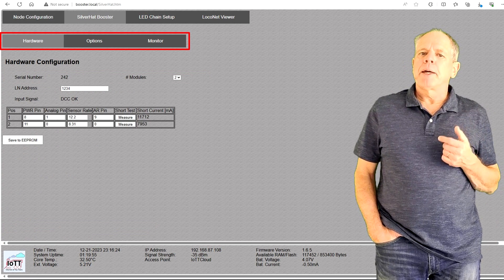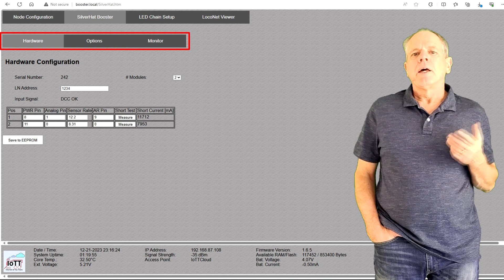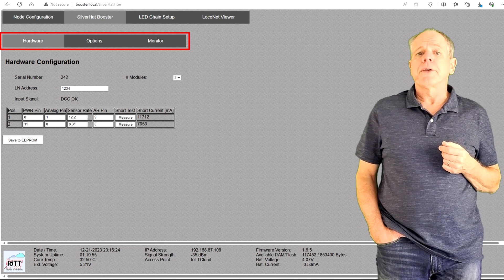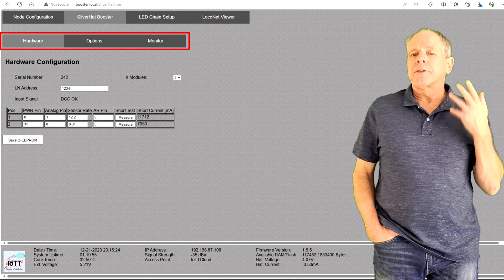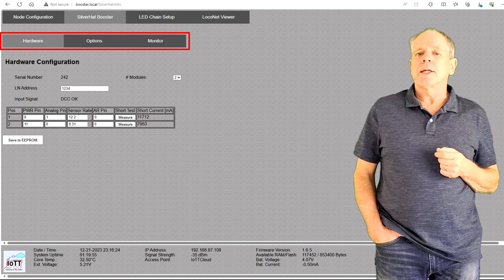The SilverHat page has three subtabs. The first is for the hardware configuration, the second is for setting up the software options, and the third is to control the booster at runtime.